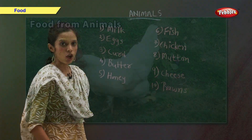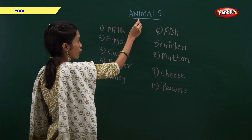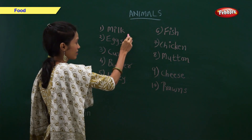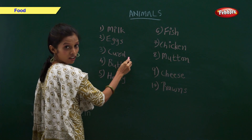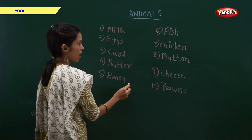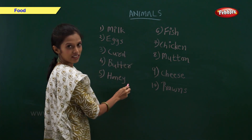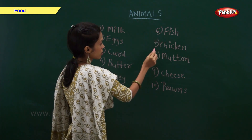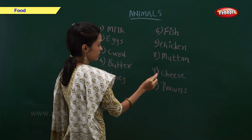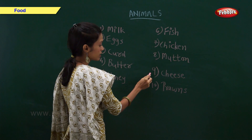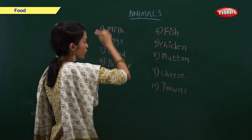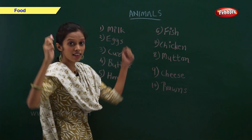We also get food from animals. We get milk, eggs, curd, butter, honey, fish, chicken, mutton, cheese, and prawns. All this food is very healthy.